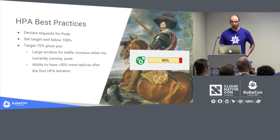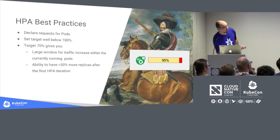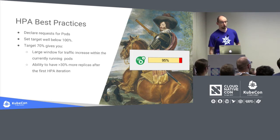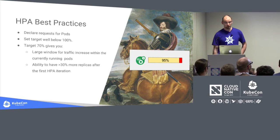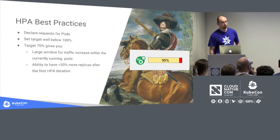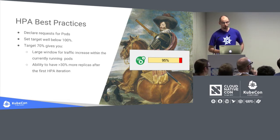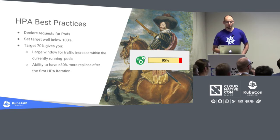If you set the target too high, you may have no ability to handle extra traffic. Remember that 100% is basically what you asked in your pod request — there may be some free cycles on the machine and you may go above 100%, but you should not count on it. Also, the red bar may be too small to trigger a decent scale-up because of the margins. If your node is fully packed and you've set this type of usage, you may have real trouble.